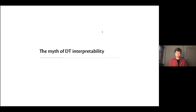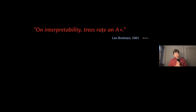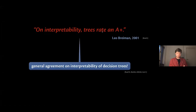Now, having talked about interpretable models, let me address why they're interpretable and what issues there are. This part is called 'The Myth of DT Interpretability.' There is a common belief that decision trees are extremely interpretable. There's a famous quote from Leo Breiman — one of the creators of random forests — saying that on interpretability, trees rate an A+. It's not just his opinion; it's a very common belief, and there are plenty of works saying something similar.